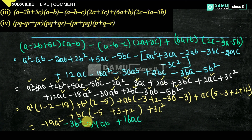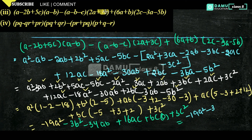Then here also, minus 5 plus 5 will cancel to zero. So BC into 0, plus 3C square. So what you can write finally as the answer, writing all the positives first: minus 19A square, minus 3B square, plus 3C square, minus 34AB, plus 16AC. So that is the answer.